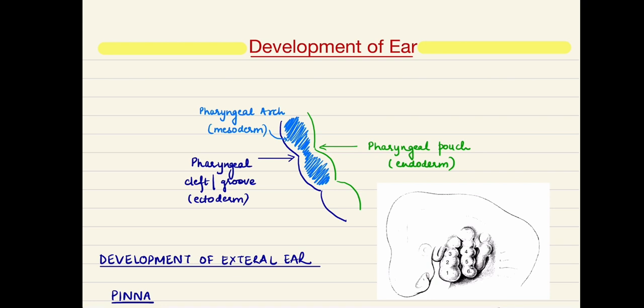Before discussing the development of the external ear, we should know about the concept of pharyngeal arches. In the developing embryo, by the side of the head and neck, there are certain mesodermal condensations known as pharyngeal arches. They are 6 in number initially, but with development, arch number 5 disappears. So the remaining arches are 5 in number: 1, 2, 3, 4, and 6.